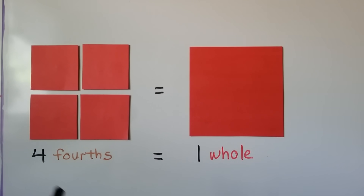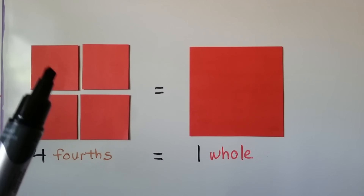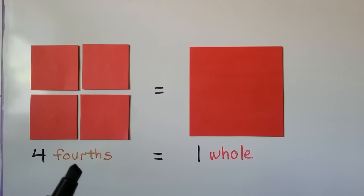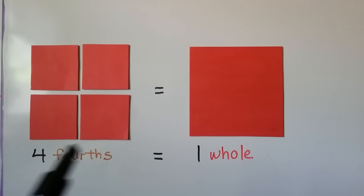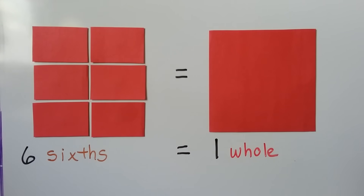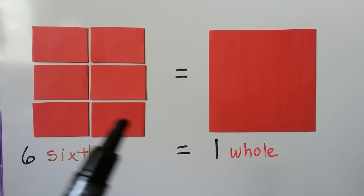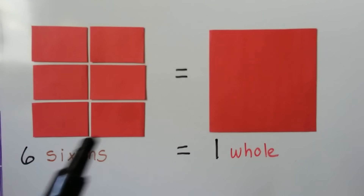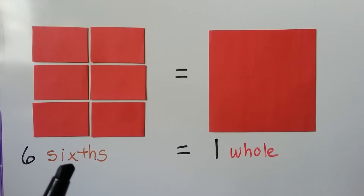Now the big red square is cut into four equal parts. We have a fourth, a fourth, a fourth, and a fourth. We have four fourths, equal to one whole square. All four fourths are equal to that one whole square. Now our big red square is cut into sixths. We have six equal pieces, six sixths. All six sixths are equal to the one whole red square.